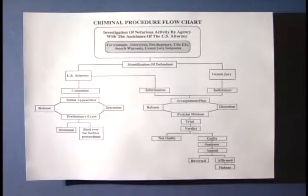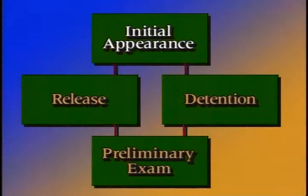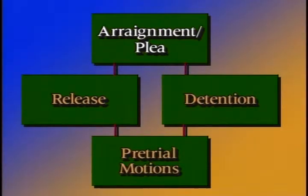The final matter to be addressed under Rule 5 is whether the defendant should be released or detained pending the trial. As you can see from the flow chart, this determination can be made more than once in the process. The decision is based on the same statute, regardless of whether it is made at the initial appearance or at the arraignment. You must apply the provisions of the Bail Reform Act of 1984 contained in Title 18 of the United States Code.